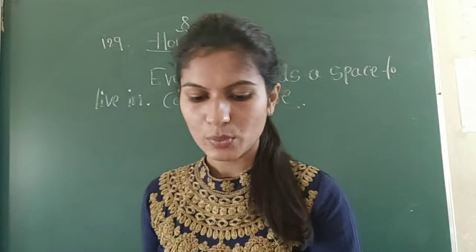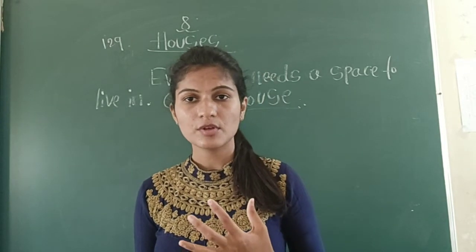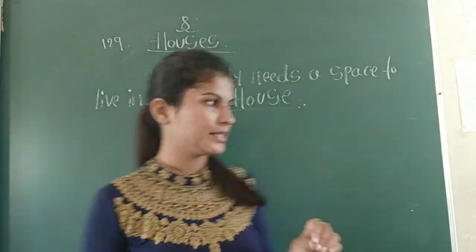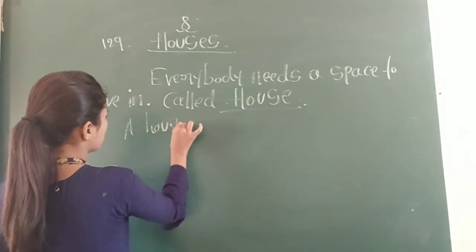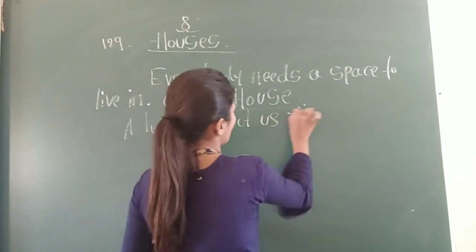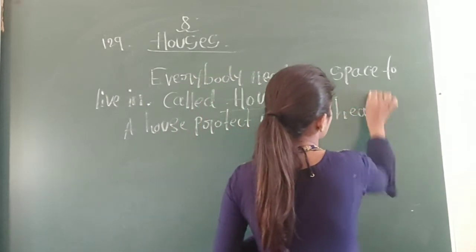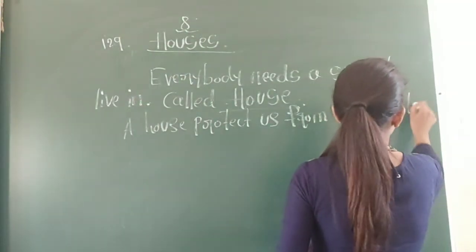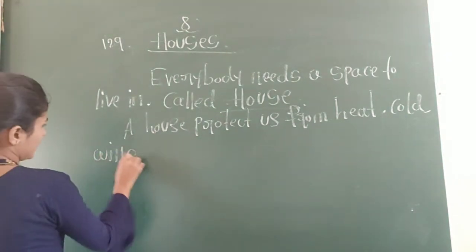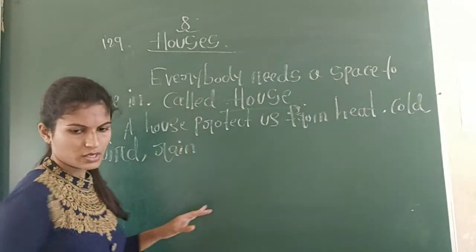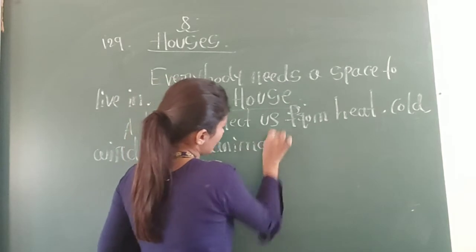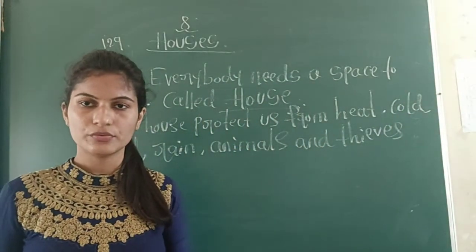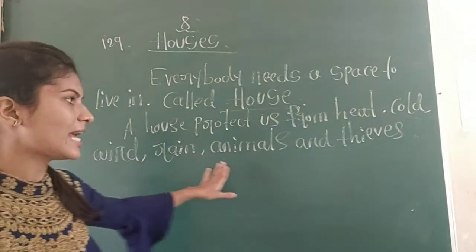What is the use of a house? A house protects us from harsh weather - from heat, from cold, from rain, from animals and wild fields. To protect ourselves from cold, heat, rain, animals and fields, we need a house.